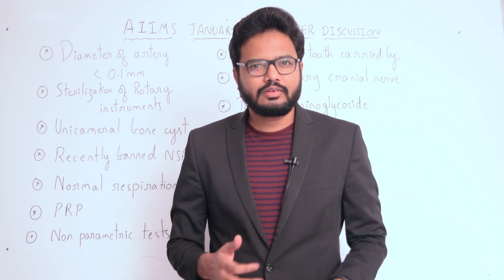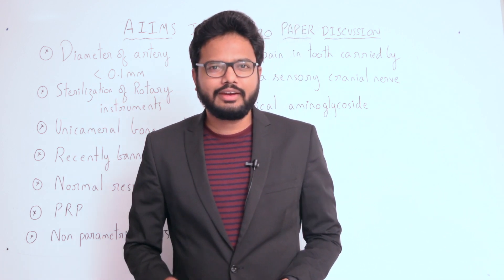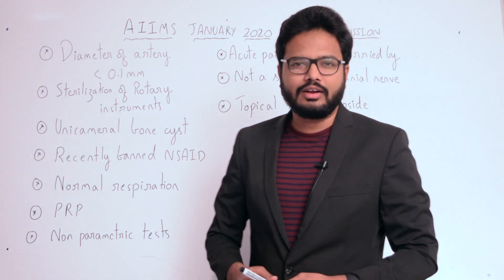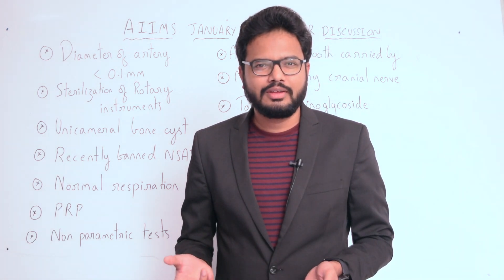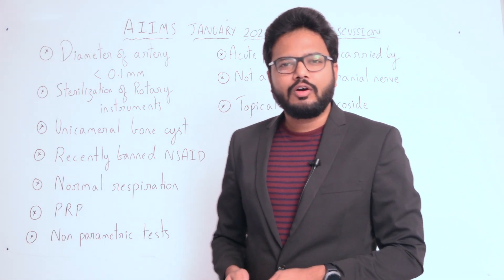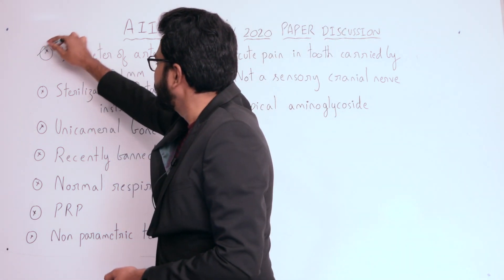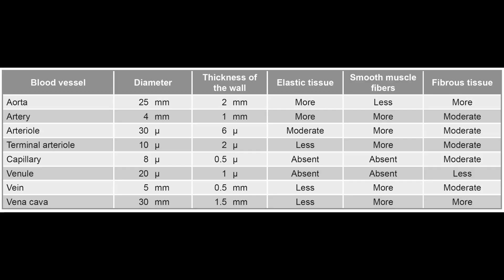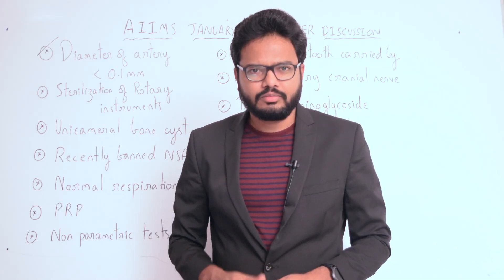Starting with the diameter of artery less than 0.1 mm — that's nothing but arterioles. As you can see in the image, we have diameters of various blood vessels like aorta, artery, arterioles, terminal arterioles, capillaries, venules, veins, and vena cava. Arterioles and terminal arterioles have diameters as mentioned in the table.